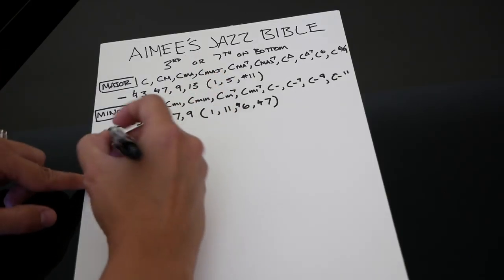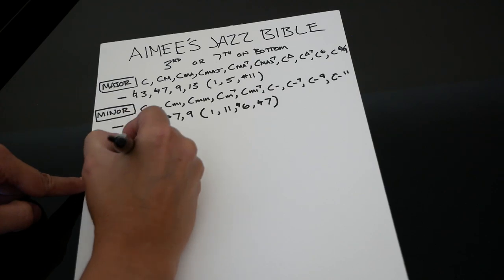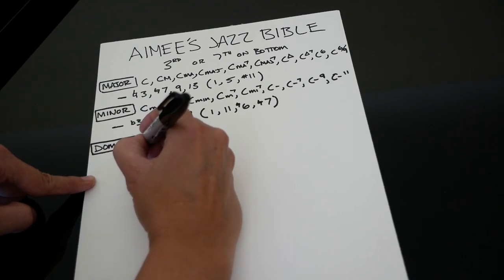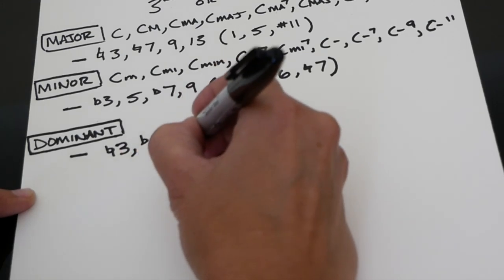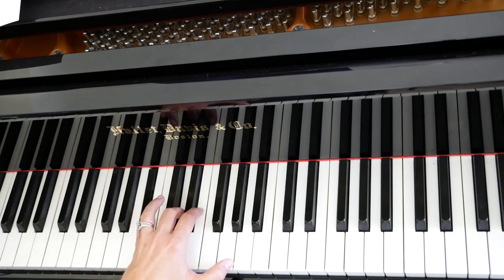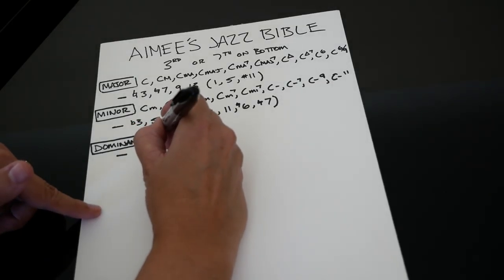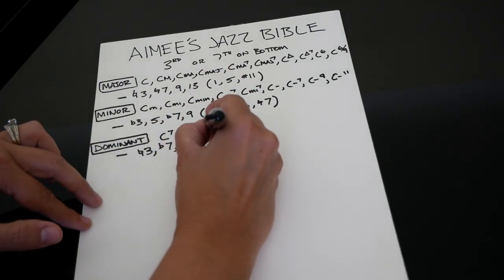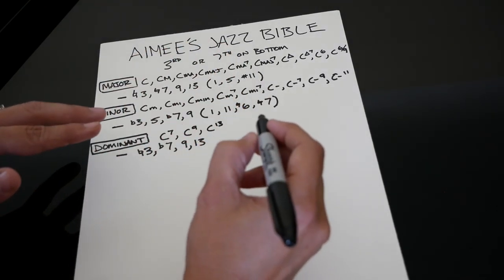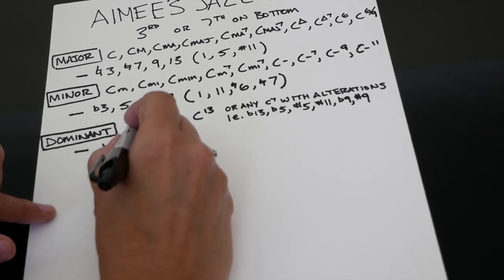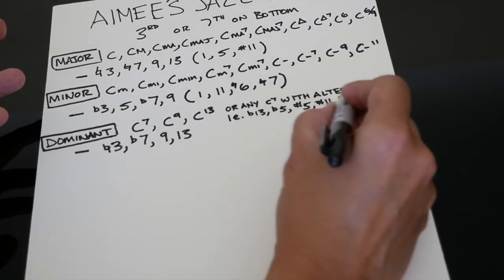Dominant chords. A dominant chord has the natural three and the flat seven. The important notes that you're always going to want to play are the natural three, the flat seven, the nine, and the thirteen. Pretty much the only ways you ever see dominant chords notated are: sometimes you might see C nine or C thirteen instead of C seven. Or sometimes you see alterations - you'll see C seven alt, or C seven sharp five, or C seven flat nine, or any combination.